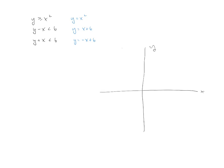The first one is a parabola. The second one is a line with a positive 1 for a slope, and a y-intercept of positive 6, something like this. And the next one is a negative slope with a y-intercept of 6. So I'll cut through the same place.